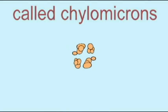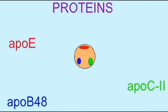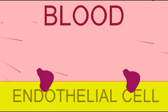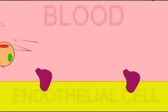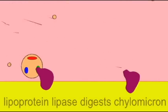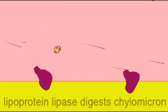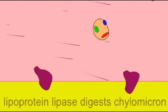As the chylomicrons pass through the blood, they bind to enzymes on the cells lining the blood vessels called endothelial cells. They bind to an enzyme known as lipoprotein lipase, and this enzyme digests some of the fatty acids of the chylomicron and releases them into the blood.